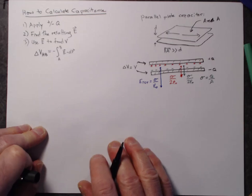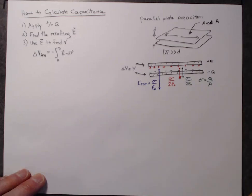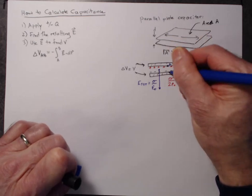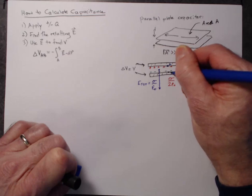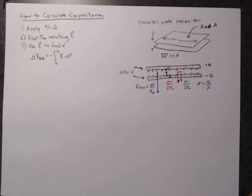Now, in order to apply this equation, I have to first choose two points, and I have to choose a path between them. So I'm going to choose a point here, point A, which is on the upper plate, and here's point B on the lower plate. And I'm going to choose a path that goes straight down from point A to point B.